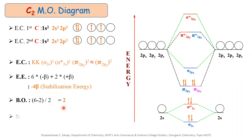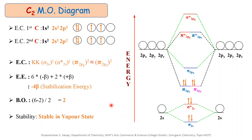The next point is stability. The energy evolved during the formation of the C2 molecule is −4β and the bond order is 2. Therefore, the C2 molecule is formed and is stable, but it is observed only in the vapor state. Regarding the magnetic property, since there are no unpaired electrons in the C2 molecule, it is diamagnetic in nature.